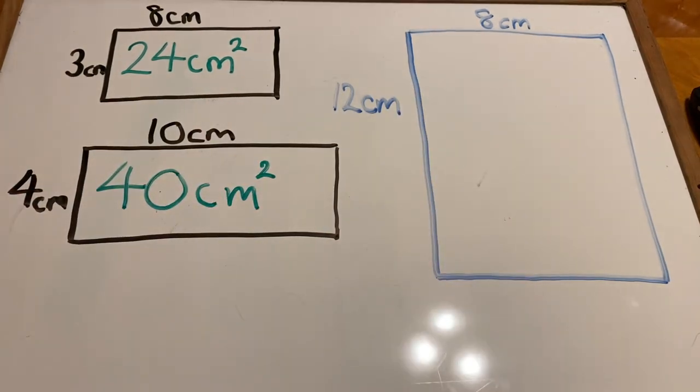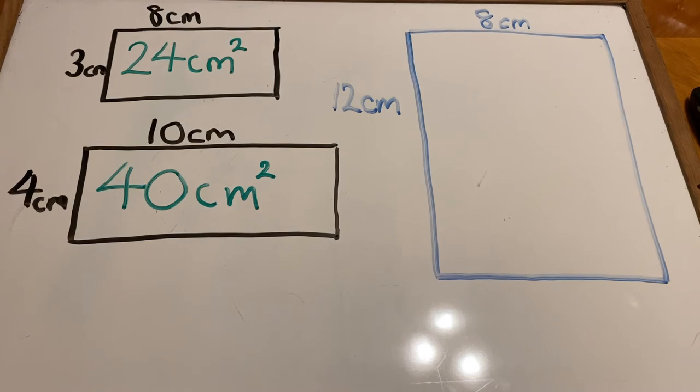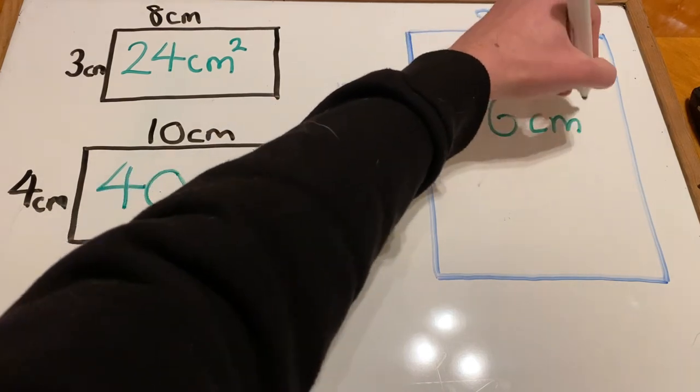Let's take a look at our final example over here. A much larger rectangle to have a go at. Now, we know what we need to do. It is the width multiplied by the length. So, this time it's 12 multiplied by 8, which we know is 96cm squared.